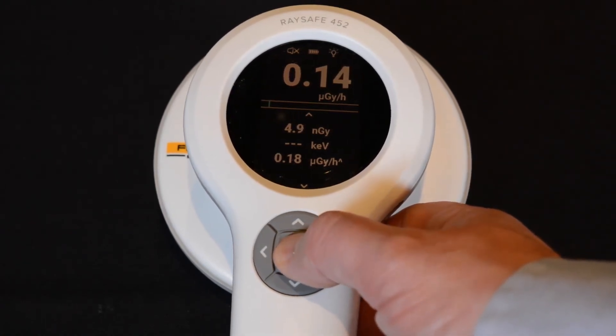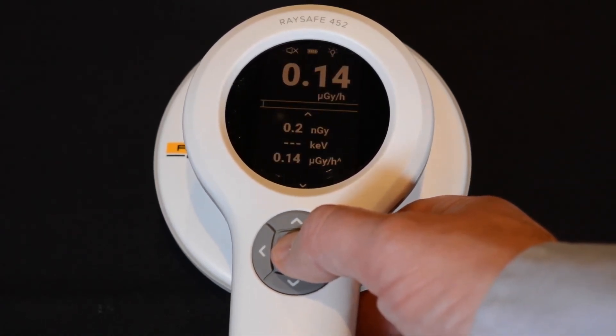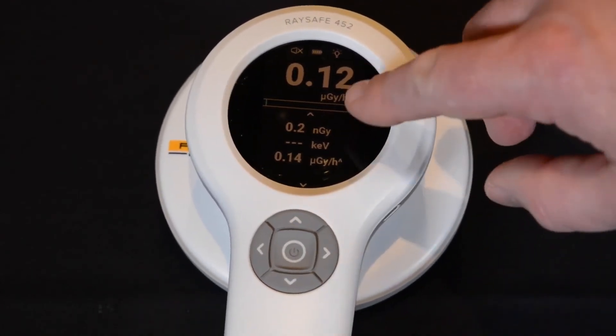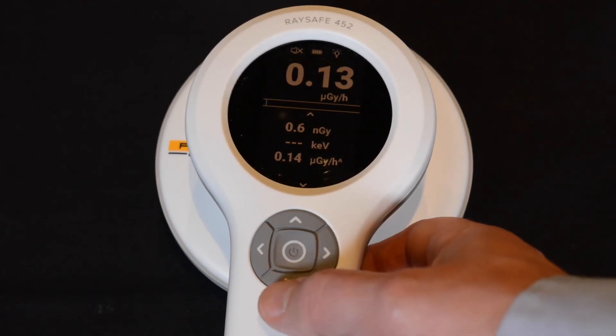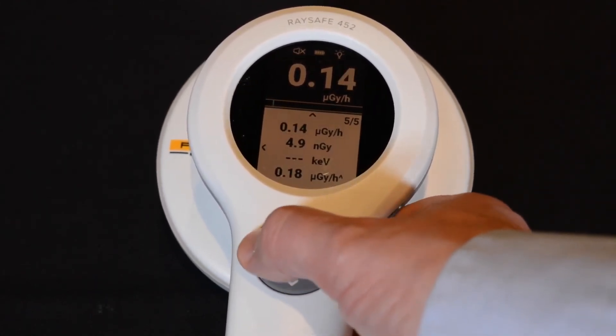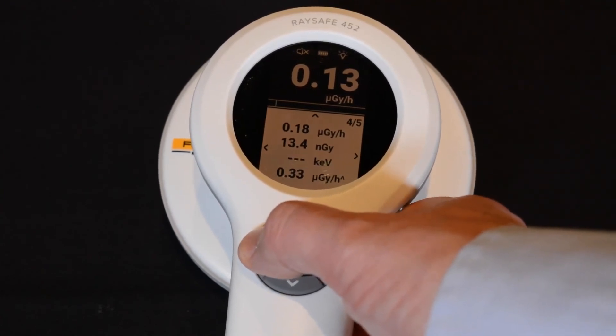You can store a measurement by quickly clicking on the center button. When you save it, it will reset the accumulation and the peak value. But the live value is always happening. You can scroll down to see what you stored, you can scroll through your saved measurements, and you can download it to a PC, export it to Excel, or handle it any way you like.